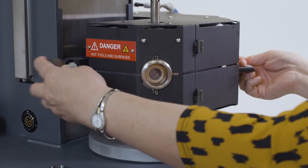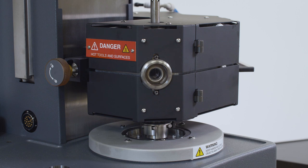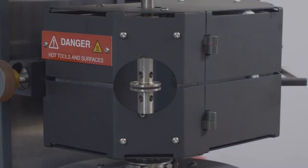Close the FCO oven. Preheat the geometry to the measurement temperature. Then zero the geometry gap.